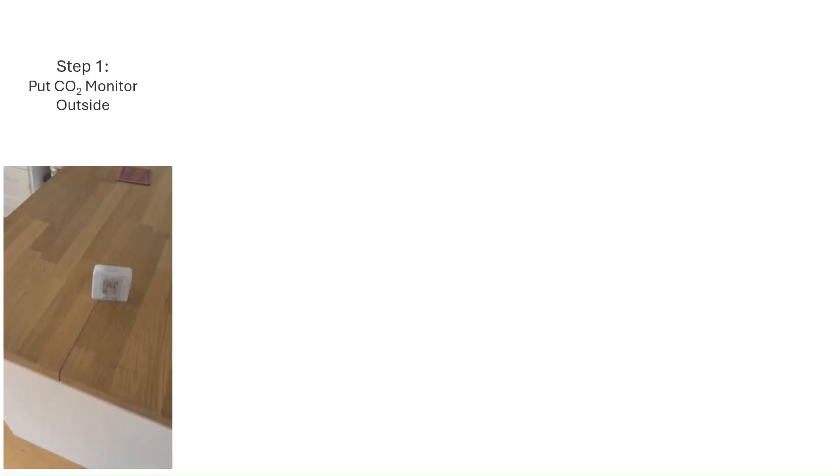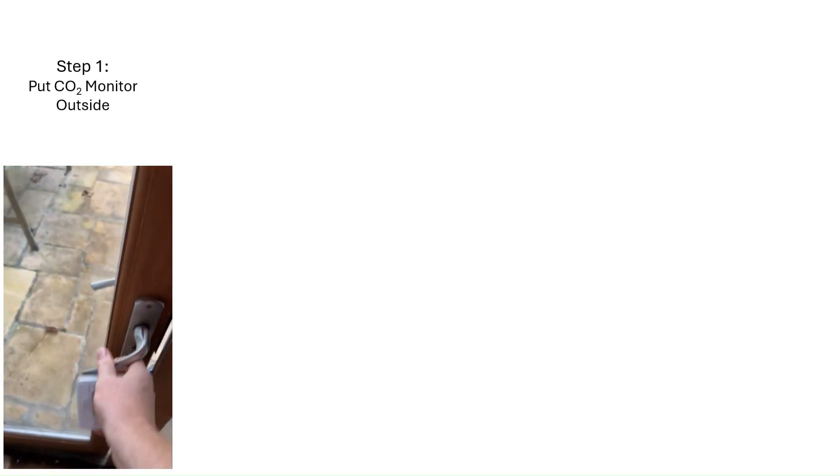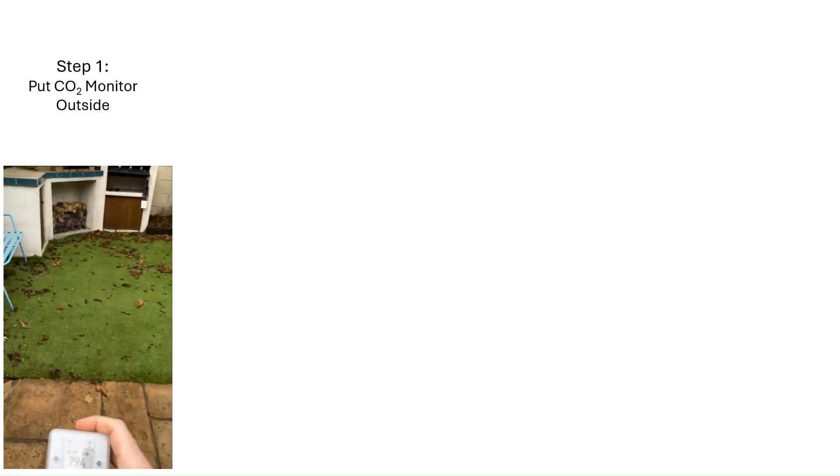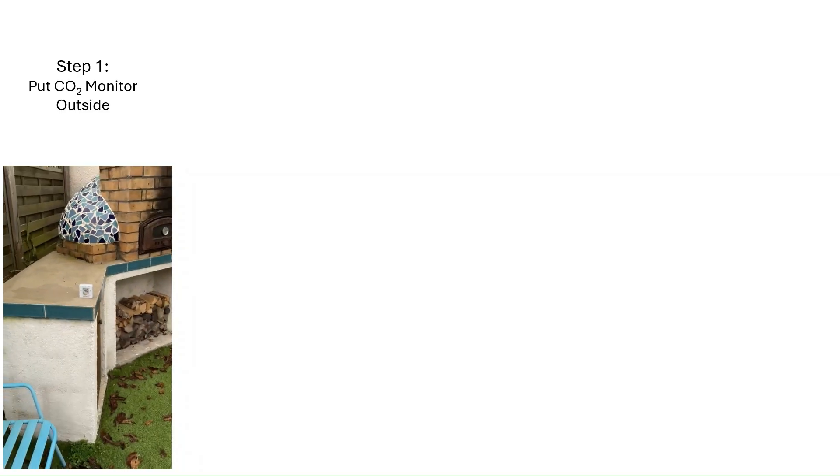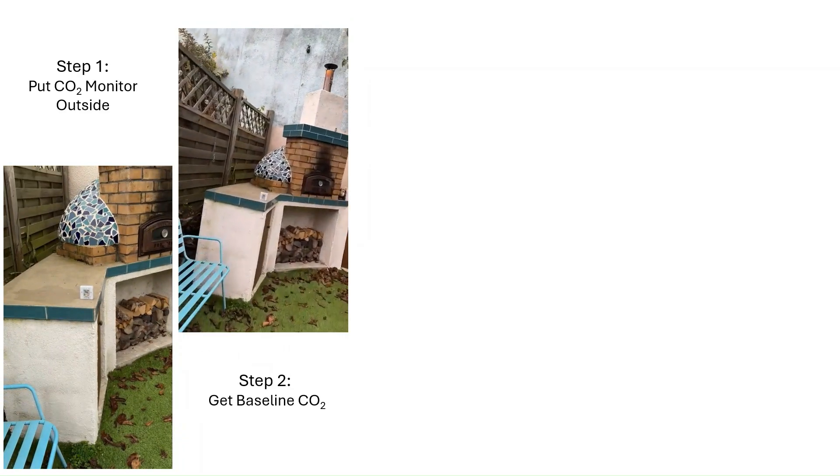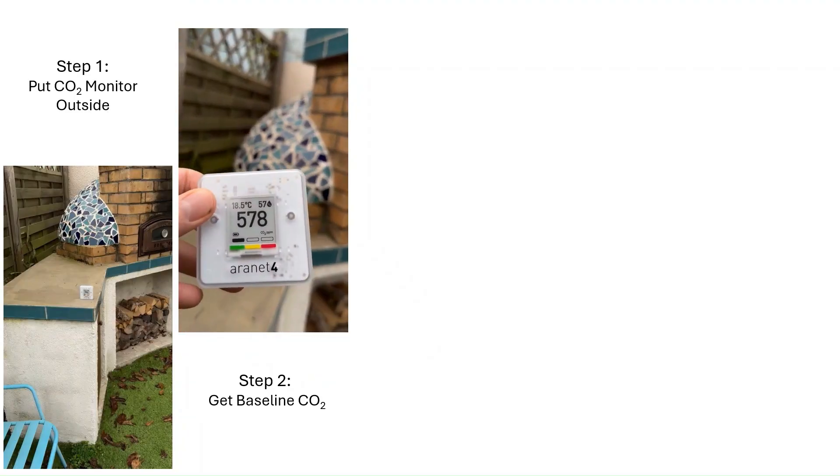To measure the ACH, first you need to measure the outdoor CO2. You do this by simply putting your CO2 monitor outside. In cities, the outdoor CO2 concentration can get higher than the commonly reported 420 parts per billion. For example, in my back garden in Bristol, it looks like the CO2 concentration is about 578.